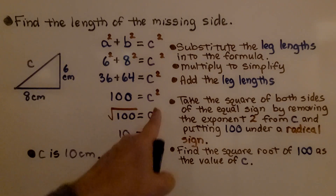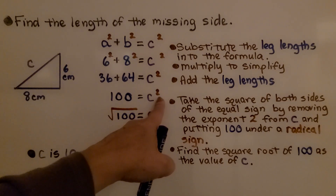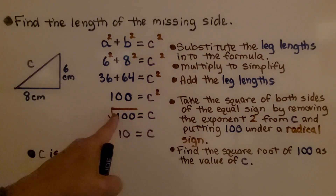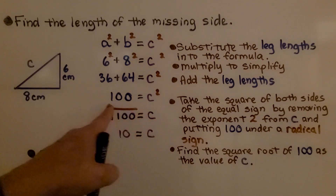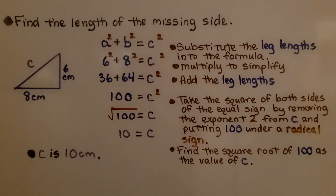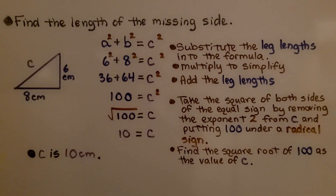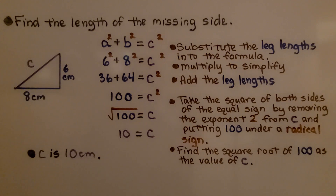We take the square root of both sides — removing the exponent 2 from c and putting a radical sign around 100. What's the square root of 100? Well, 10 × 10 = 100, so c = 10. Since the measurements are given in centimeters, c is 10 centimeters.